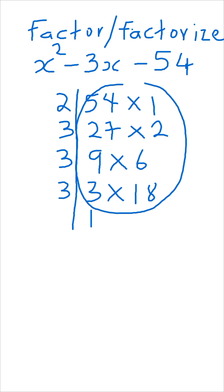all these factors, we look for 2 that when we add them together, it will give us minus 3. So 54 and 1 cannot give us 3, 27 and 2 cannot give us 3, 18 and 3 cannot give us 3.